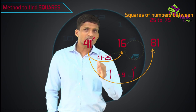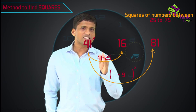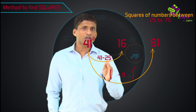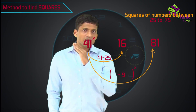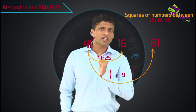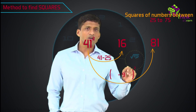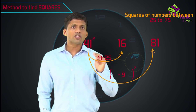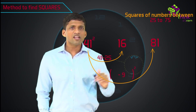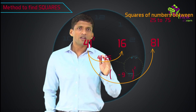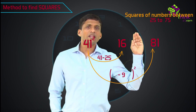Once more: first step is take the difference from 25, which is 16 here — simply 41 minus 25 — so you get 16 as the first two digits. Then take the difference from 50, which is 50 minus 41, equal to 9. Square of that number — 9 square is 81 — and that will be the last two digits.